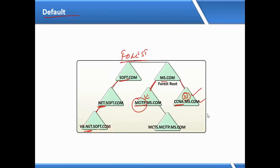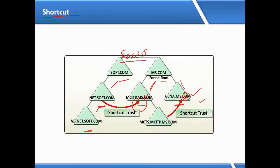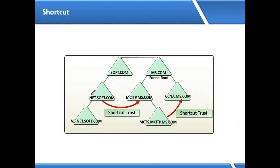The second type is shortcut trust. For example, a user from net.soft.com wants to log into mcitp, or an mcitp user wants to log into ccna — we configure a shortcut trust. This is also within the forest, but we have to configure it manually.